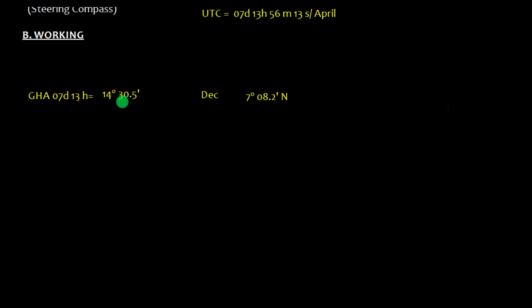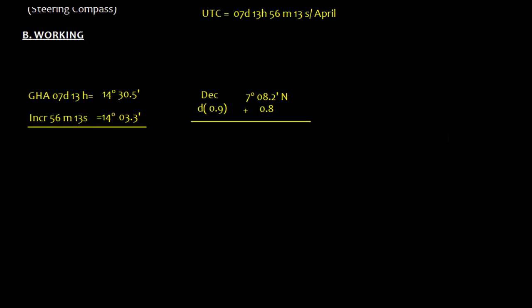We have noted down GHA, we have noted down declination, and then we need to find the increment table. The increment table is for 56 minutes and 13 seconds. We come to the increment table of 56 minutes and 13 seconds. We need to choose sun, so here is 14 degree 03.3, that is the increment. Also we need to go to the v and d correction table, so for 0.9 the value is 0.8.